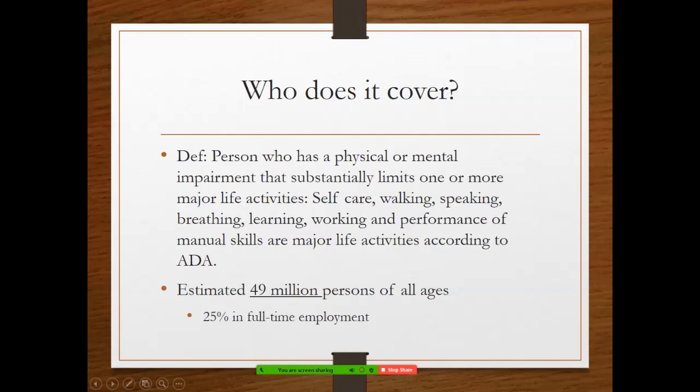Based on our most recent numbers, 49 million persons of all ages are covered under the ADA. We have around 300 to 350 million people in the United States, so approximately 50 million people would be potentially eligible for ADA accommodations. That's a lot.